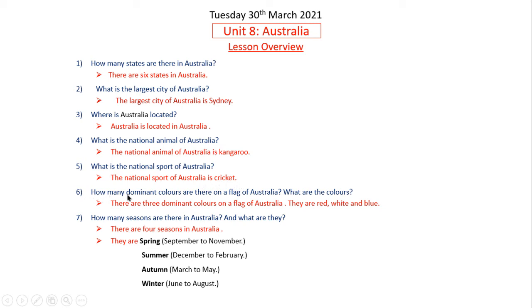Question 6: How many dominant colors are there on the flag of Australia, and what are they? There are 3 dominant colors on the flag of Australia. They are red, white, and blue.